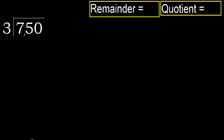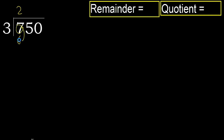750 divided by 3. 7 is not less, therefore with 7: 3 multiplied by which number is nearest to 7 but not greater. 3 times 3 is 9, which is greater. Multiply by 2: 3 times 2 is 6, which is not greater. 7 minus 6 is 1.